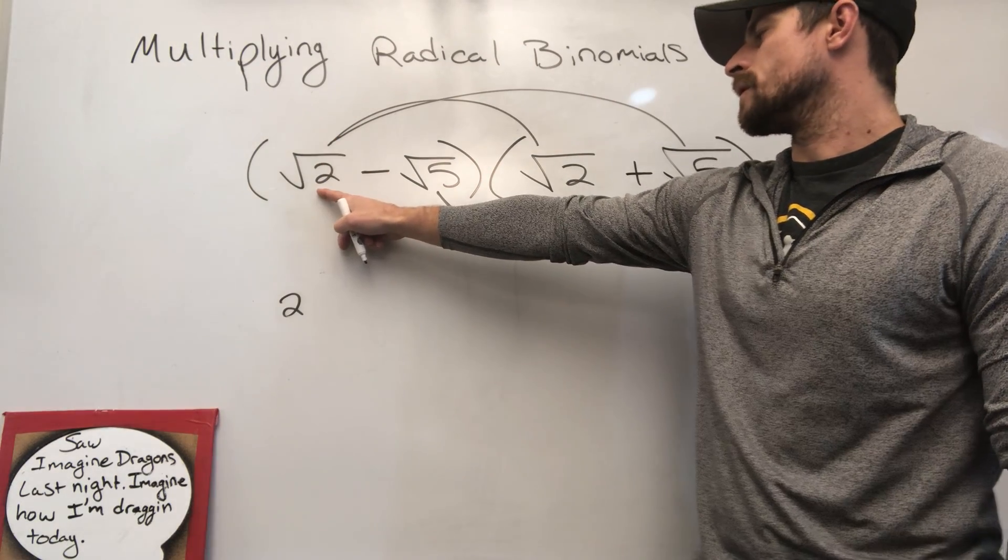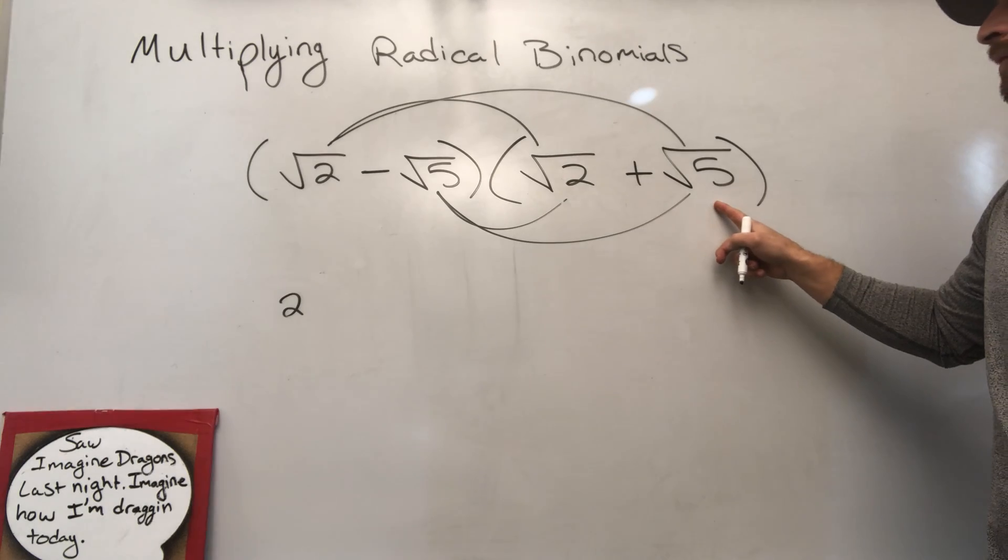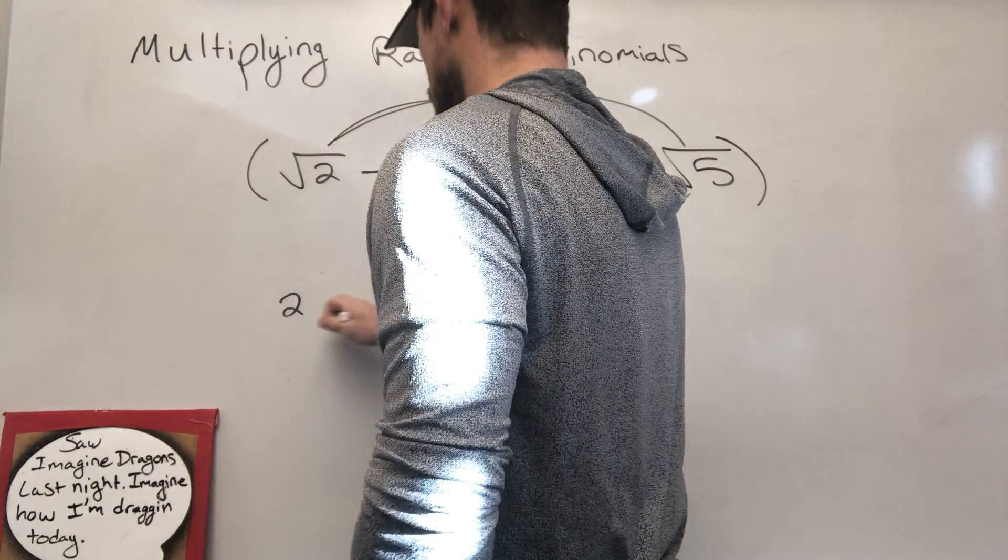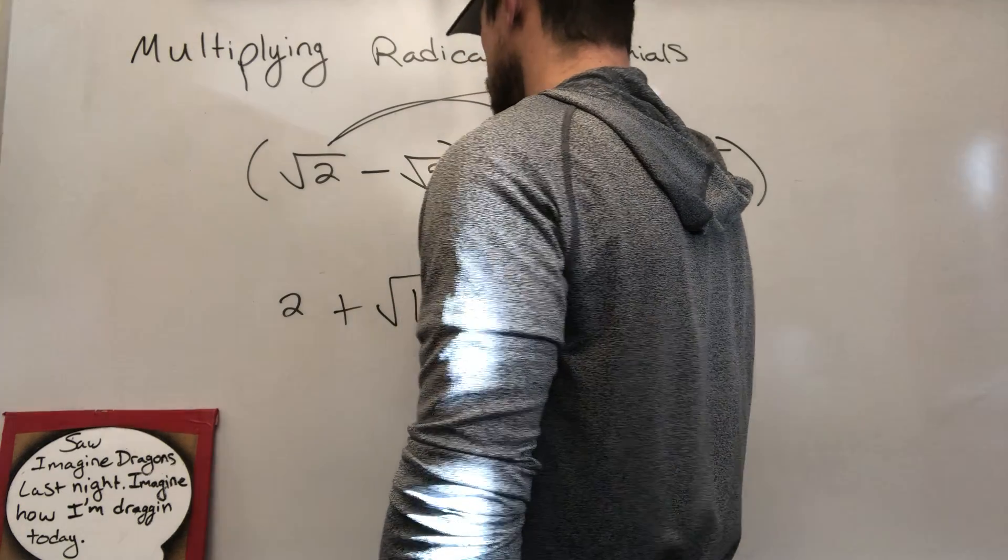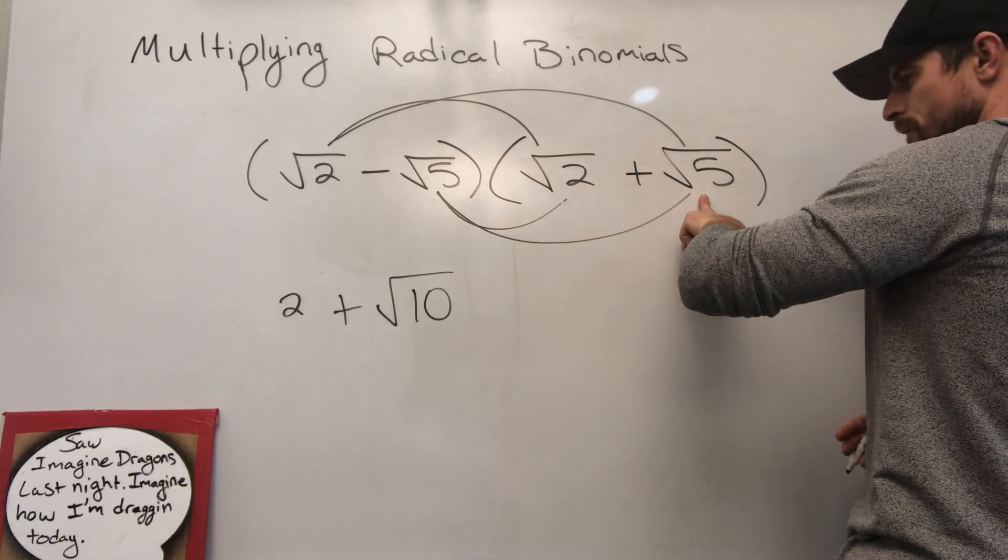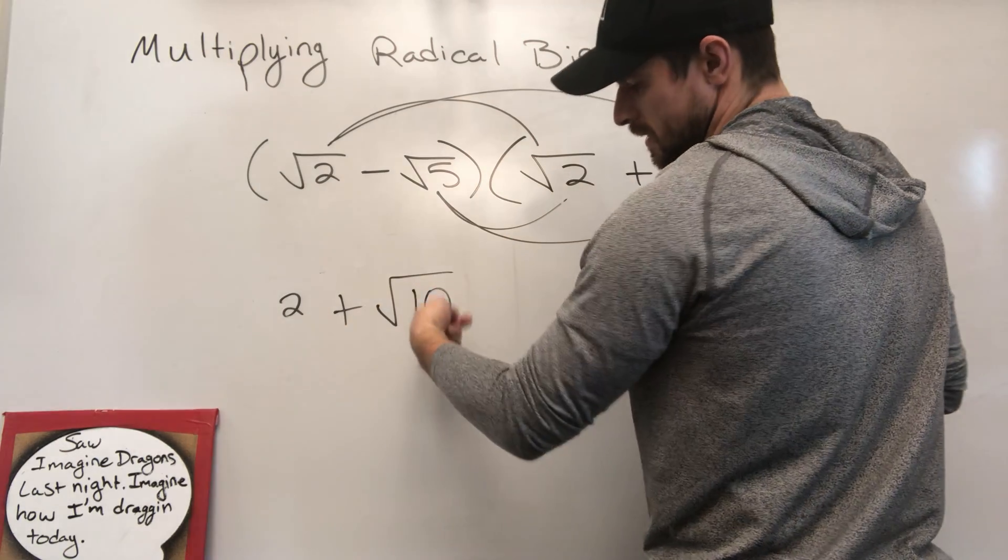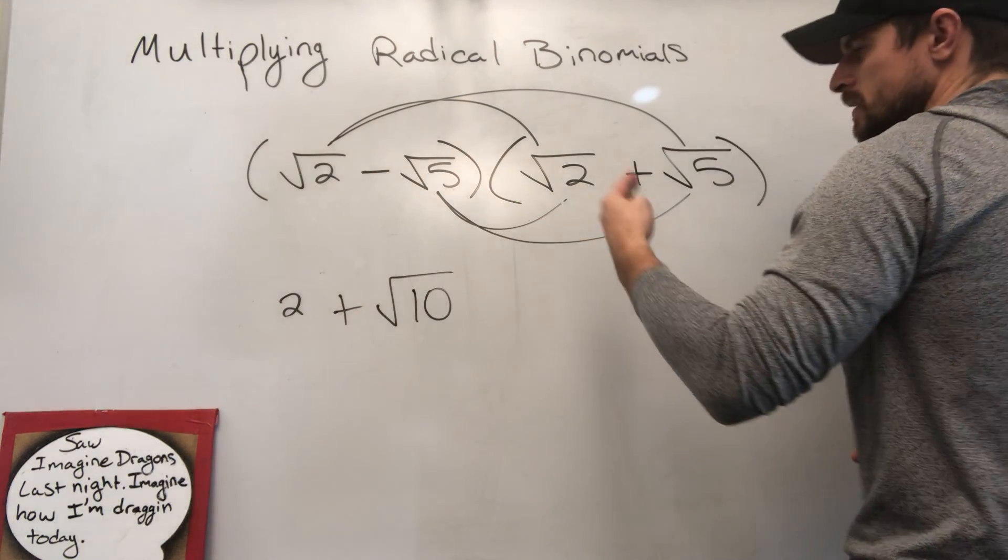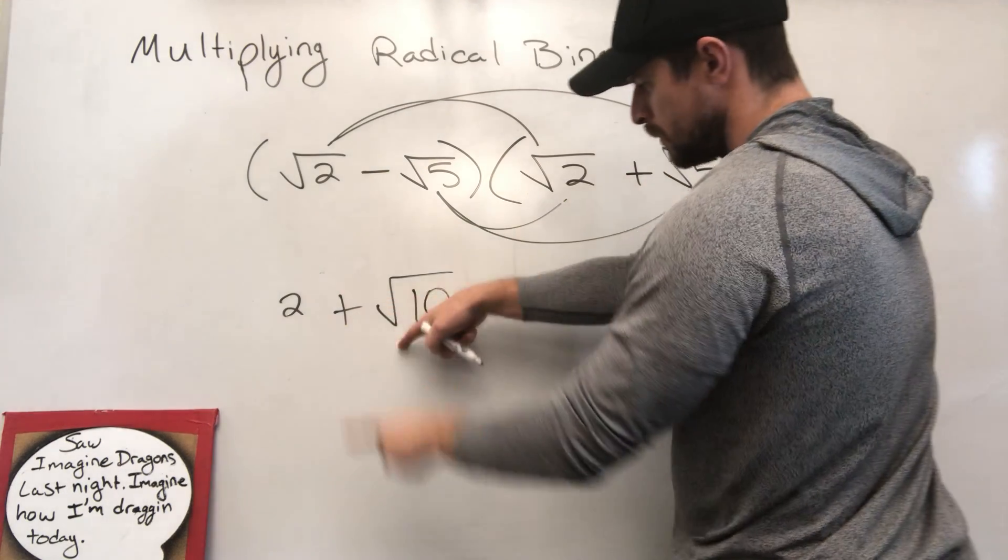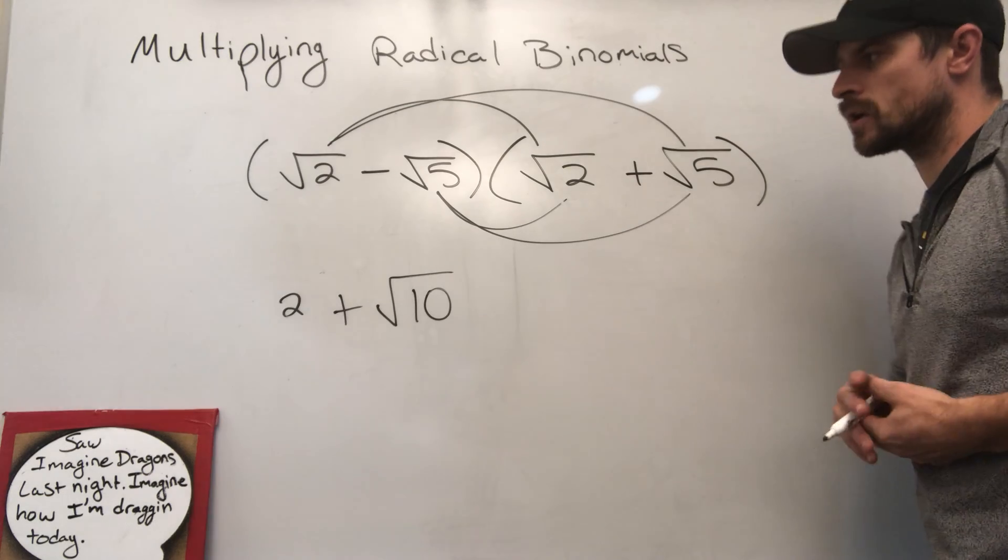I'm going to take the square root of 2 and multiply it by the square root of 5, which gives me the square root of 10. 2 times 5 is 10, so that's where the 10 came from. Put the radical around it. Okay, so far so good.